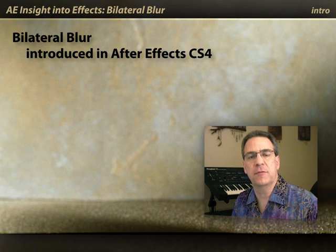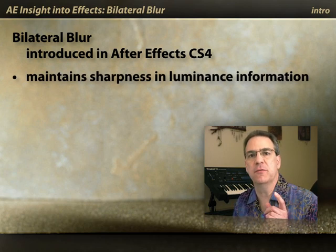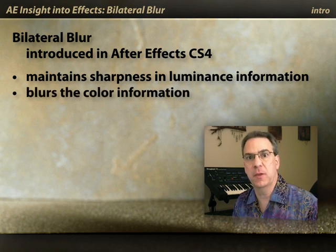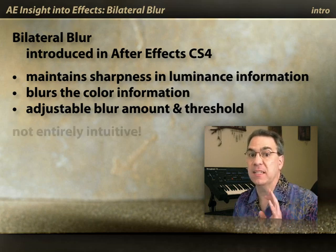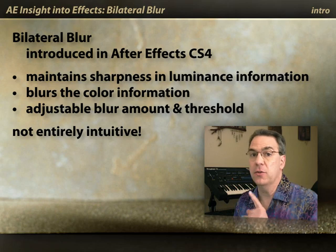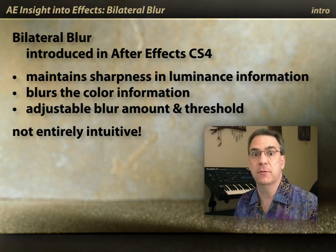Bilateral Blur was introduced in After Effects CS4. It's an intelligent blur in that it keeps the luminance information and therefore sharpness in the image, but blurs the color information. You can set a threshold for how much information is retained. It's a little non-intuitive to use and the default settings are a little bit strange, so let's spend a minute and explore it so that you can better understand how to use it.